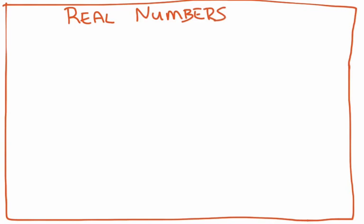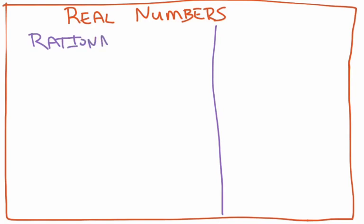Now we've been talking about real numbers so far this year — I just haven't called them real numbers yet. Real numbers can be broken up into two different categories: rational numbers and irrational numbers.